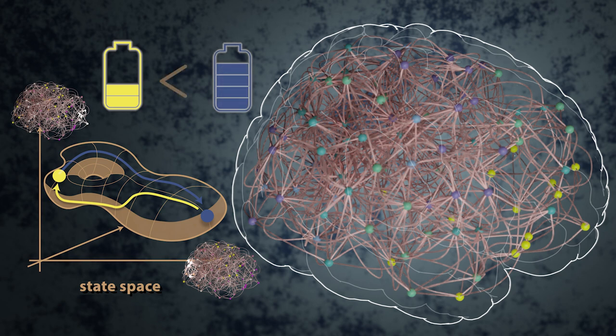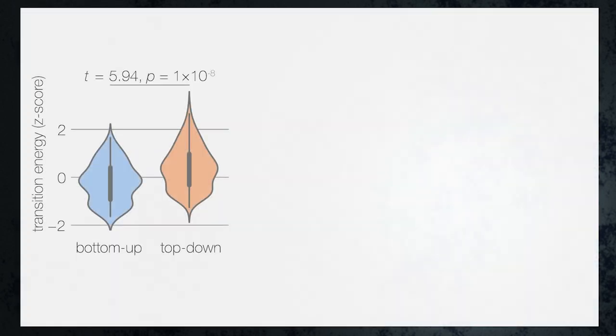Then we subtract these energy estimates to examine whether there is an asymmetry between bottom-up and top-down state transitions. When we applied this approach to many state transitions sampled from our manifold, we found that bottom-up state transitions had lower energy compared to their top-down counterparts. This result indicates that bottom-up state transitions were easier for our model to complete.